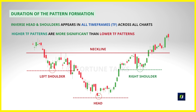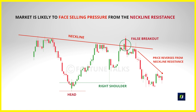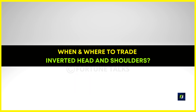The longer the inverted head and shoulders pattern takes to form, the more significant it is. How the right shoulder forms is also a key criterion. If the pattern has a very long right shoulder, you might want to avoid buying the breakout because the price has already moved a long distance from the lows of the right shoulder to the resistance area, attracting more buyers along the way. This creates strong selling pressure from profit booking and traders who want to sell at the resistance. A rule you can follow is that the right shoulder should be above 50% of the head.